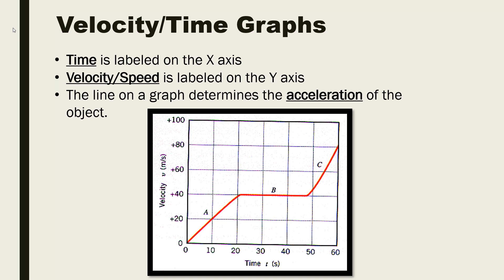Time is always labeled on the x-axis, and velocity and speed are always labeled on the y-axis. When we look at a velocity-time graph, we are usually describing the acceleration of an object. Acceleration is not something we get to until lesson 4, so in the next lesson we'll learn all about acceleration and revisit these graphs then.